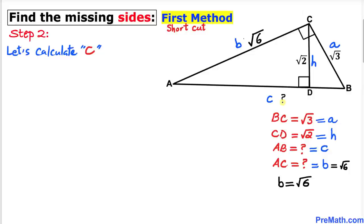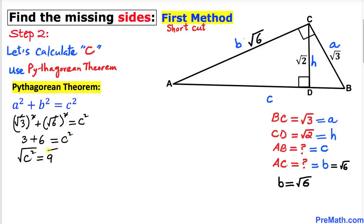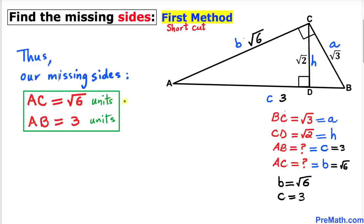Next, let's calculate side length c. Since we are dealing with a right triangle, we use the Pythagorean theorem: a squared plus b squared equals c squared. Filling in the values — a is square root of 3, b is square root of 6 — we get 3 plus 6 equals c squared, so c squared equals 9. Taking the square root on both sides, c turns out to be positive 3, since c is a side length. So our missing sides are square root of 6 units and 3 units.